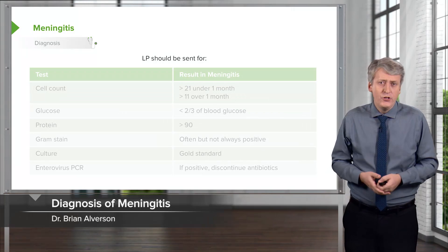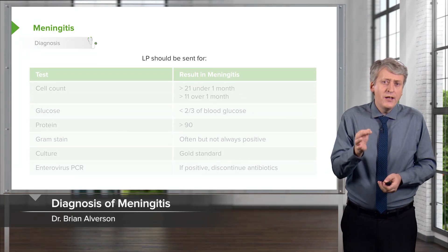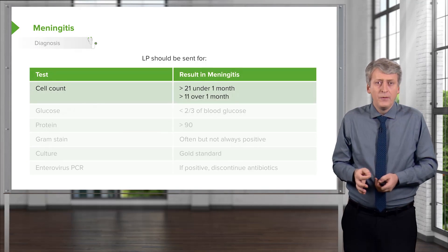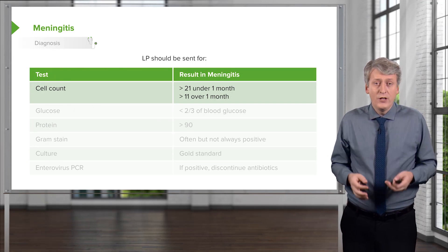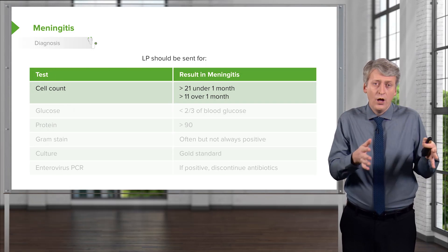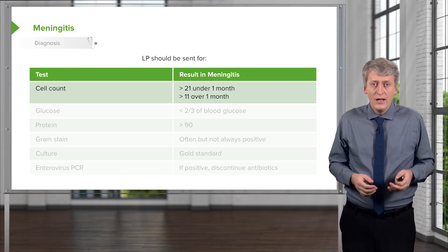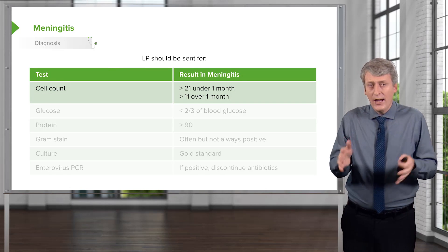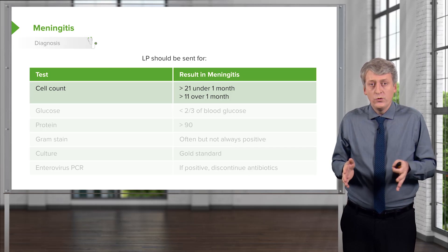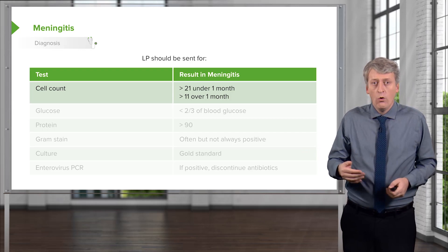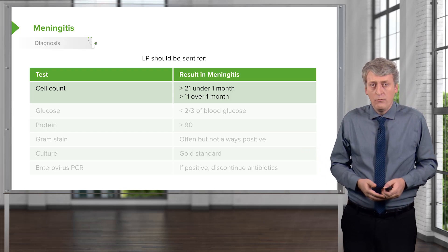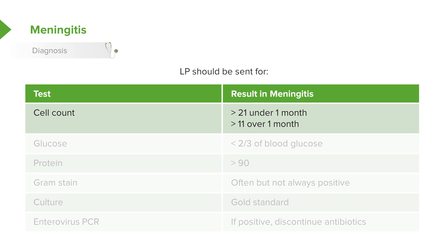What about meningitis? You should send an LP in a baby if they have suspicion for meningitis. This is typically in children under four weeks of age and maybe in that four to eight week range, depending on whether you use the Philadelphia and Boston criteria as opposed to the Rochester criteria, where you only do it if the white cell count is abnormal. So what labs should we send that cerebral spinal fluid for after we've obtained it?